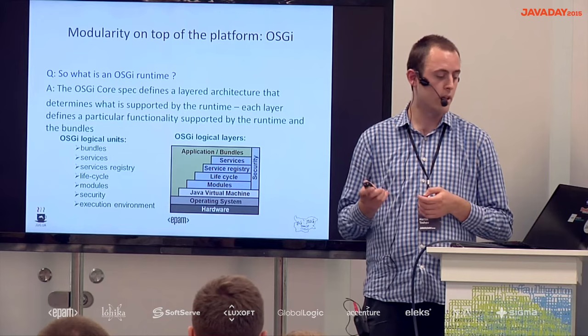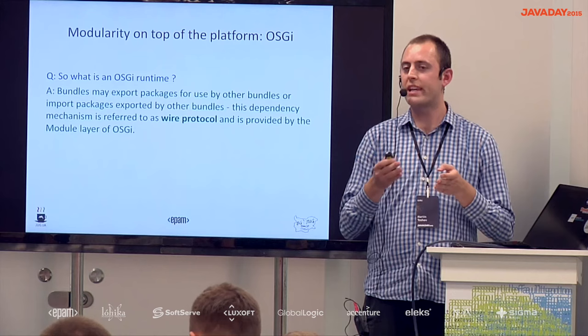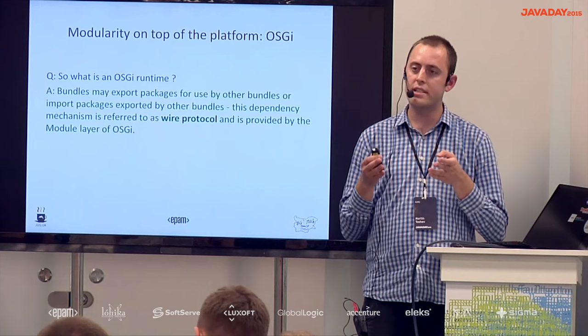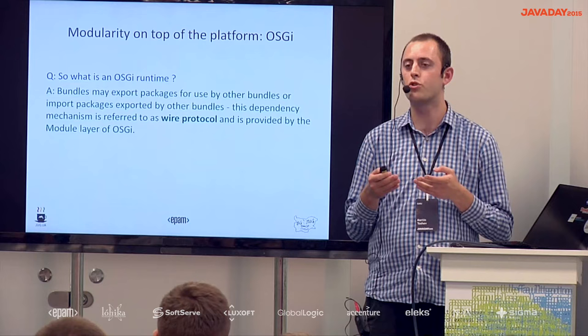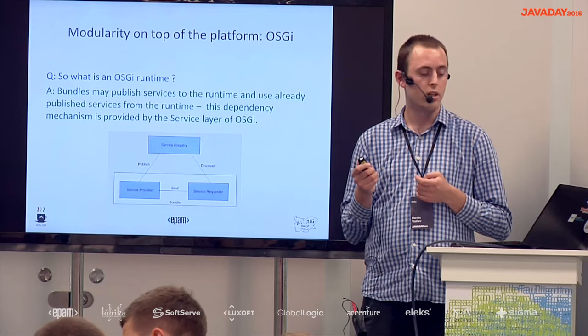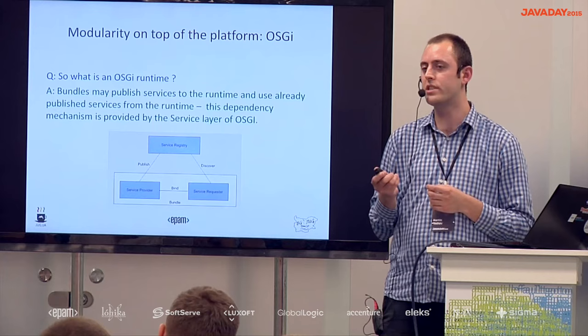The first mechanism is the wire protocol, which specifies what packages are visible to the outside world. Some plugin metadata provides explicit information about which packages are visible to other bundles; other bundles can explicitly import those packages and use classes from them. The second mechanism is the service registry, which allows bundles to expose services consumed by other bundles — a more loosely coupled manner to specify dependencies.